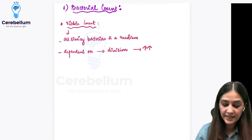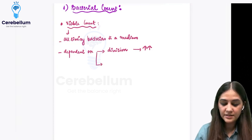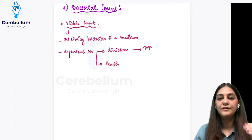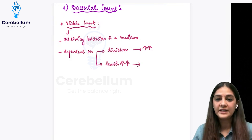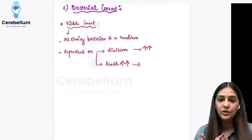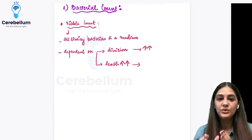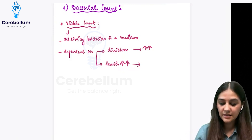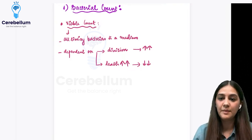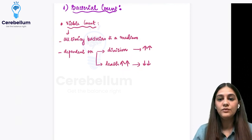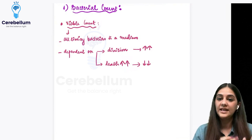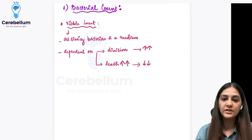The next thing it is dependent on is death. If the number of bacteria that are dying increases, the total pool of viable count decreases. So remember: if division is taking place, viable count increases; if death increases, viable count decreases. These are things that are asked in your examinations as well.